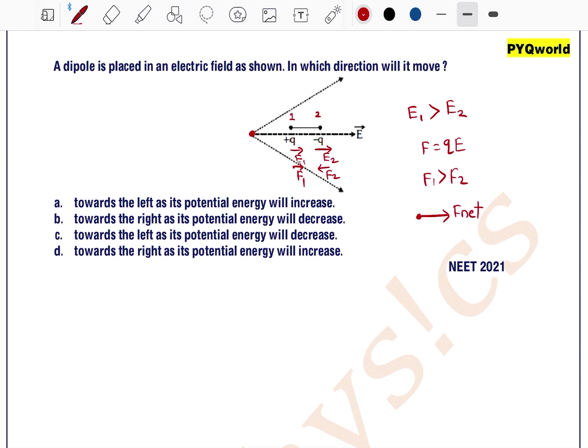Charge always moves from higher potential to lower potential. So we can say the charge is moving towards the right as its potential energy will decrease. Option B is the correct one.